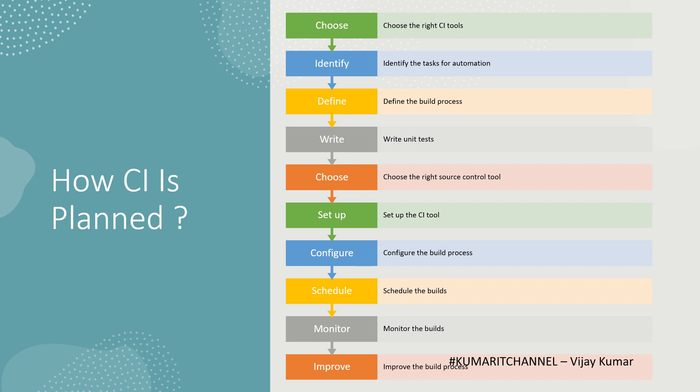Configure the build process to build, test, and package the application. Schedule the builds to run at particular times such as nightly builds, or triggered whenever there is a change in the code. Monitor the builds to ensure they complete successfully, and if there are failures, take corrective actions immediately. Then continuously improve the build process by adding more tests, automating more tasks, and integrating more tools.